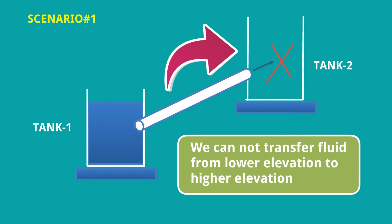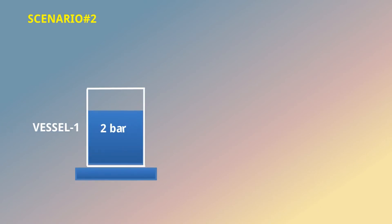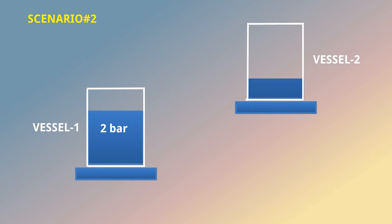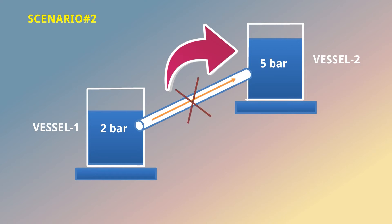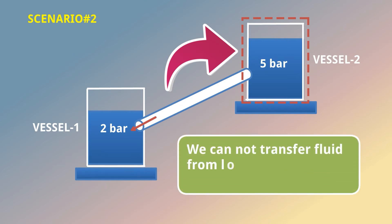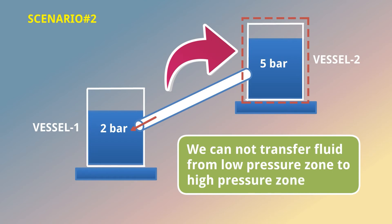Scenario 2: There are two vessels — vessel 1 has fluid at 2 bar pressure and vessel 2 has fluid at 5 bar pressure. How do we transfer fluid from vessel 1 to vessel 2? A simple pipe and valve arrangement is not possible here, because due to the pressure difference, high pressure fluid will always flow to the low pressure side. So fluid would transfer from vessel 2 to vessel 1. We cannot transfer fluid from a low pressure zone to a high pressure zone without special equipment.